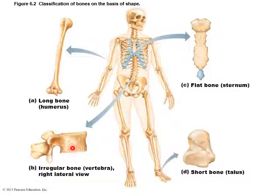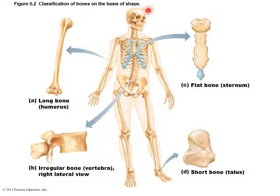Vertebrae and possibly the sphenoid and ethmoid are irregular in shape. What I really want you to focus on is long bones — most bones of the limbs, arms and legs — and flat bones associated with the ribs, sternum, and some skull bones. For short bones, just remember the sesamoid bone — that's really all you have to worry about going forward.